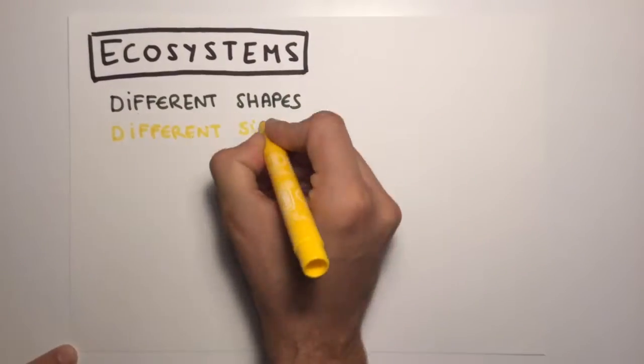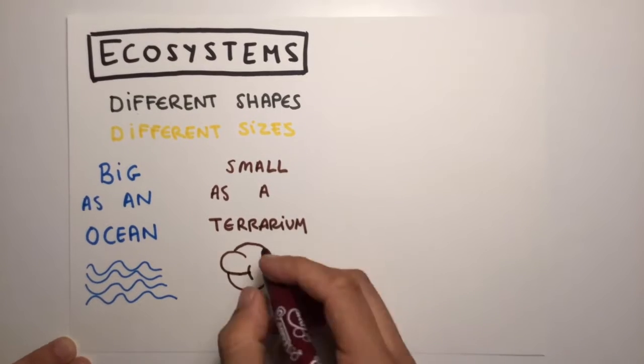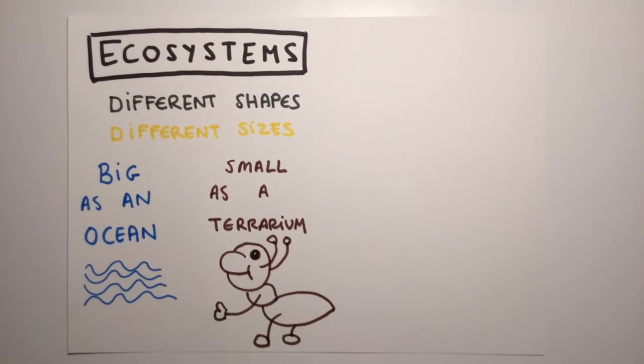Ecosystems come in all shapes and sizes. They can be as small as a terrarium in your room or as big as an ocean.